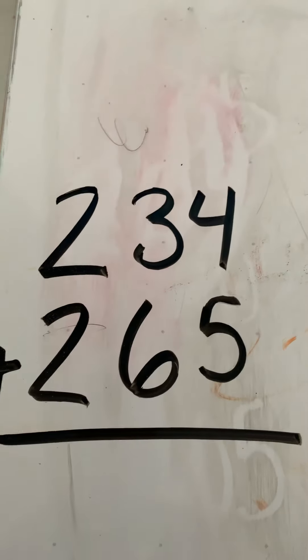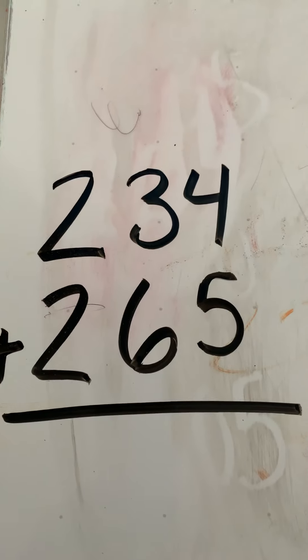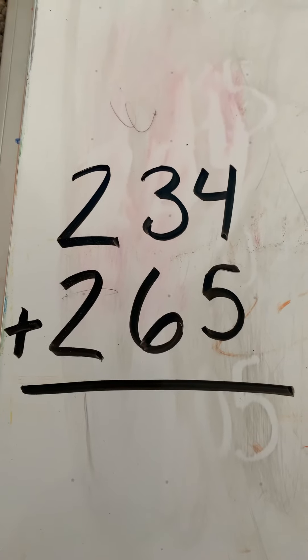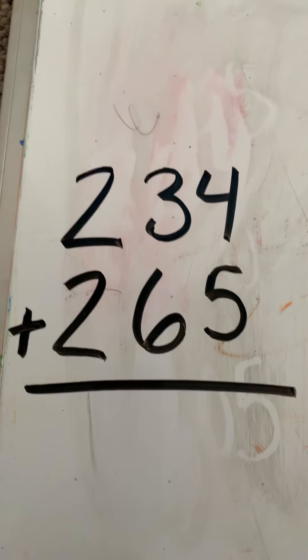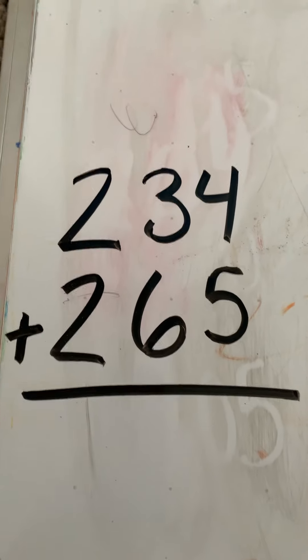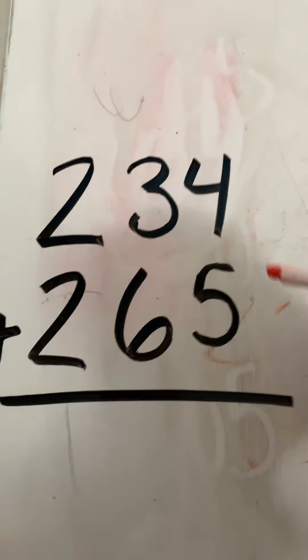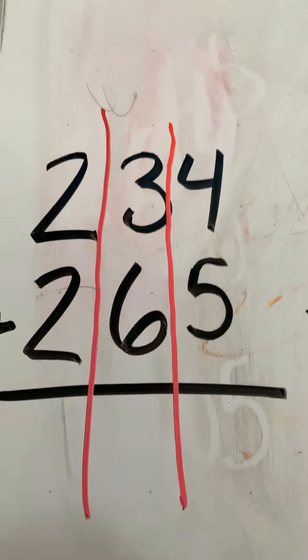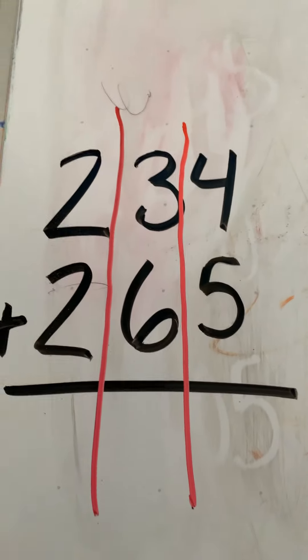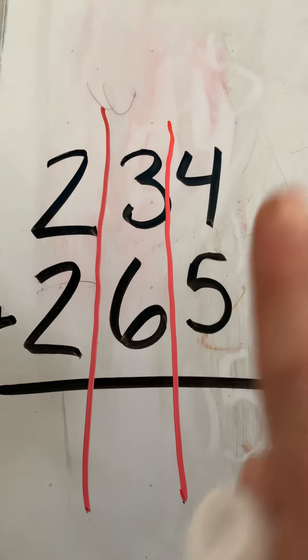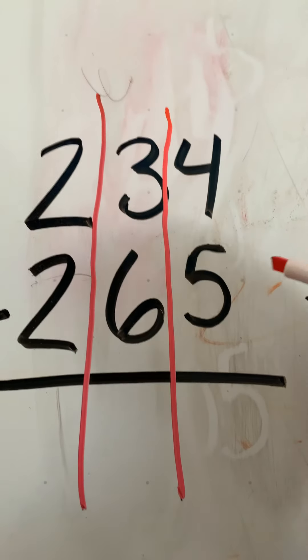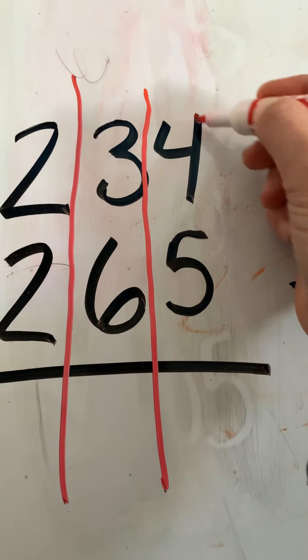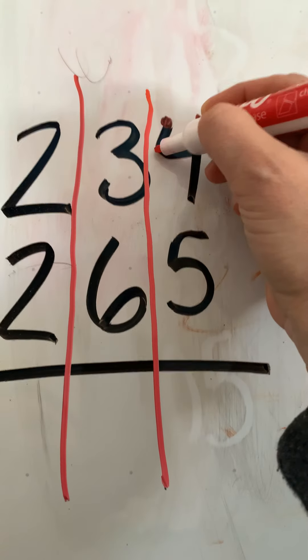We have 234 plus 265. You better remember, I hope you remember, what side do I start on when I'm adding? What side I start? Right is always right. It's the number one spot. Now remember, if you like to stay organized and draw lines straight down, you can. But you do not have to do that. So we're going to start at that one spot. We're going to do 4 plus 5. And I am going to show with some touch points. We're going to start at the bigger number. Count up. Ready? 5, 6, 7, 8, 9.